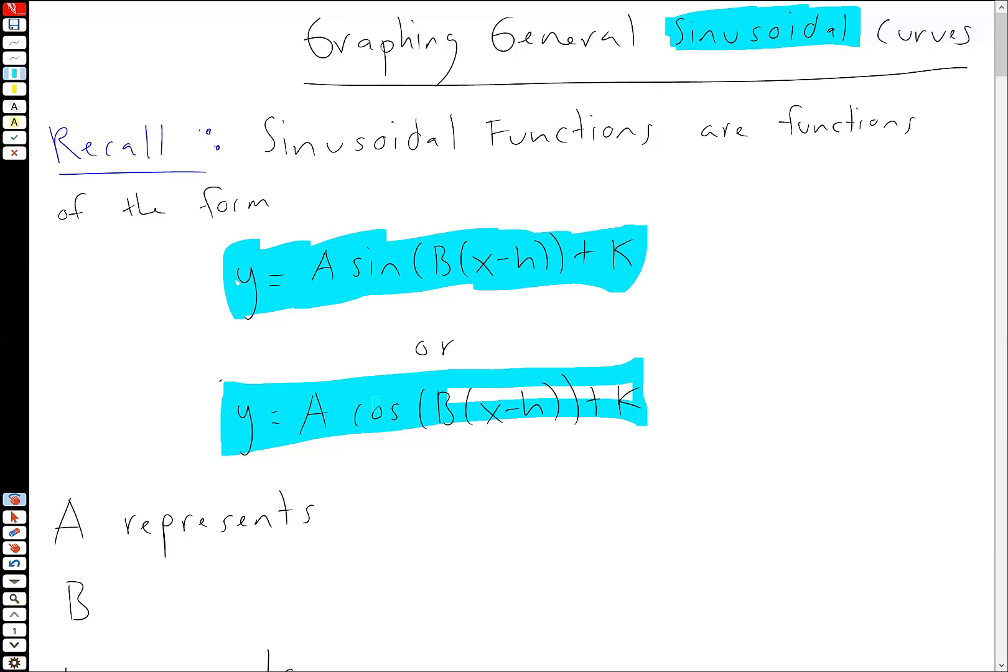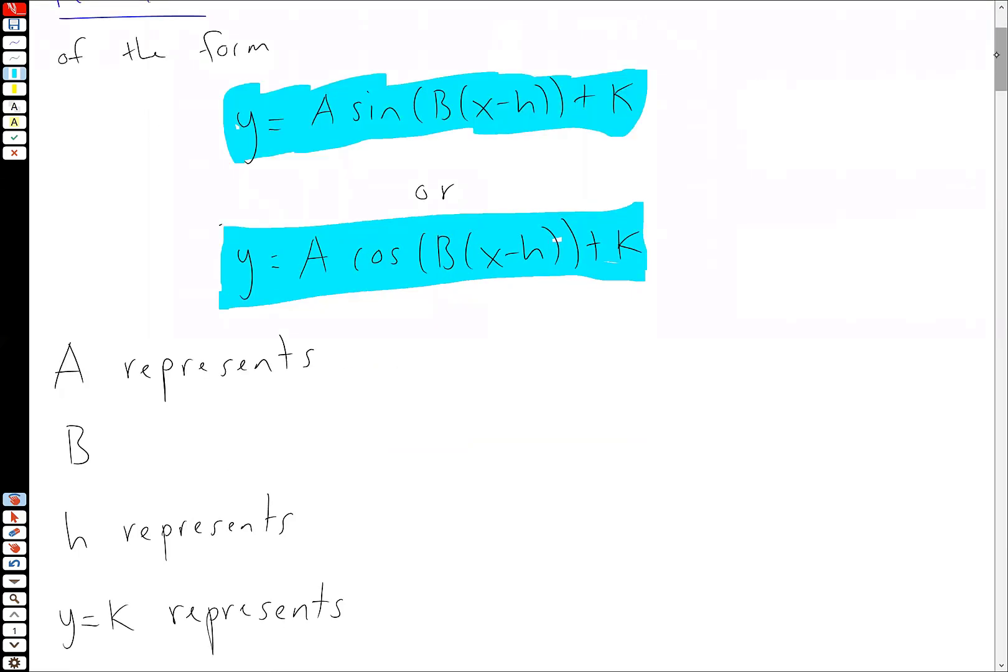And what I want you guys to take away from this video is a process for how to graph these. Now remember from your activity in class, these numbers here mean things. So first of all, and I should be careful here, the absolute value of A represents the amplitude. Remember amplitude's a positive distance.